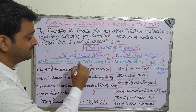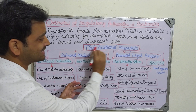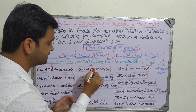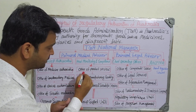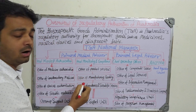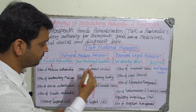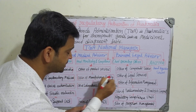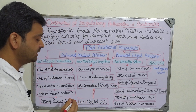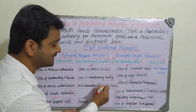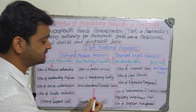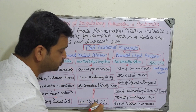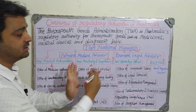Also under the National Manager is the Head Monitoring and Compliance group. This includes the Office of Product Review, the Office of Manufacturing Quality, and the Office of Laboratories and Scientific Services. These are also supported by a Group Support Unit.